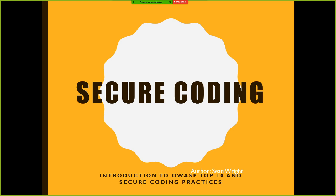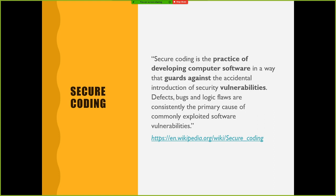So just covering off a very basic definition of what secure coding is — that's the definition from Wikipedia. In a nutshell, you try to code in a way that prevents bugs, because at the end of the day vulnerabilities are typically just bugs — a very niche set of bugs focused around security. It's making sure you do good coding practices to prevent that. If you have very strong coding practices, generally you'll find that your code is pretty secure.